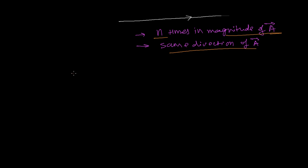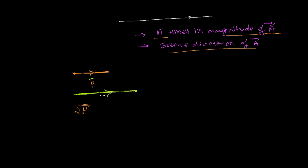Let's say I have a vector p — this is the starting point and this is the ending point. If I'm going to multiply this vector by two, vector 2p represents a new vector which is double in magnitude of vector p. This is 2p, which is twice the magnitude of the initial vector p, but the direction is again the same.